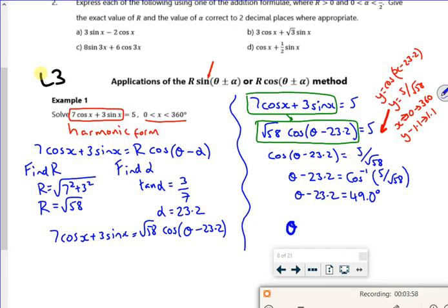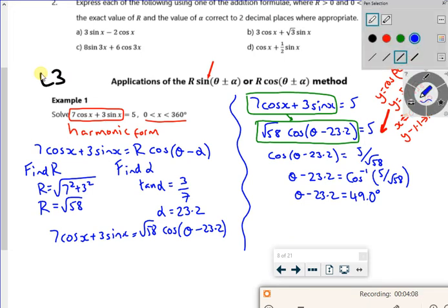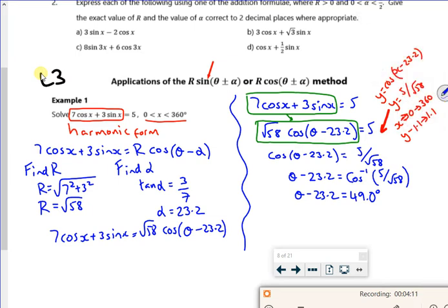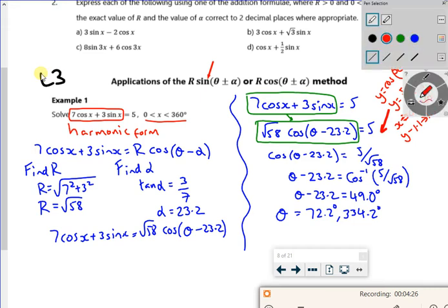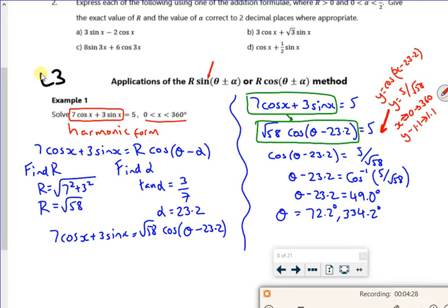And the final answer is, oh, I've done it again. Keep pressing the wrong button. I need to use the one on the screen, not the one in front of it that I've used for 20 plus years. So it's very hard to change it. So my theta value I'm going to get out is 72.2 or 334.2 on my graph. So I'd do my graph with this information and get out these answers there.